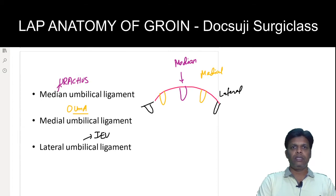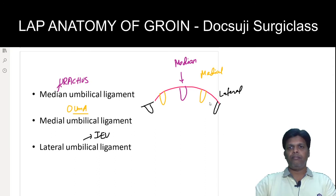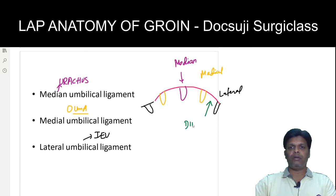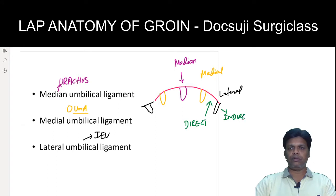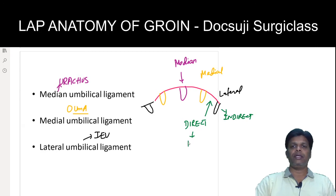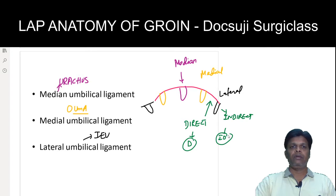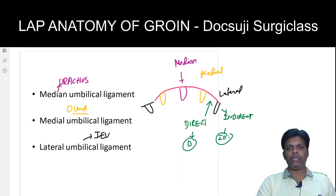These three structures are very important in identifying the types of inguinal hernia. The space between the medial and lateral umbilical ligament is called the direct space, and the space lateral to the lateral umbilical ligament is called the indirect space. From the direct space you get a direct hernia, and from the indirect space you get an indirect hernia.